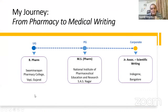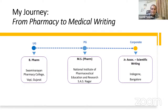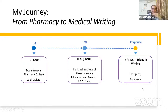I completed my undergraduate B.Pharm from Swaminarayan Pharmacy College in WAPI, Gujarat. Then I completed my post-graduation — MS Pharm in medicinal chemistry from NIPR, SS Nagar. Then I moved into the corporate. I've already told you my story — how I went from MS Pharm, got into Indigen, was selected, and got into the field of medical writing.